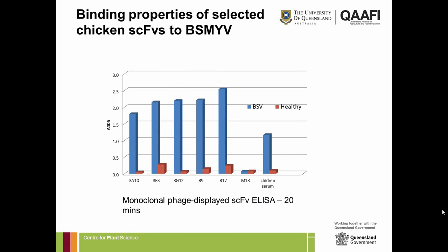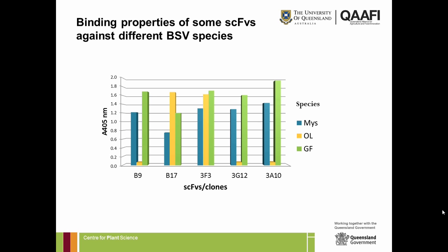Once pure clonal populations of phage were obtained, she used molecular techniques to isolate the antibody genes and examine the binding properties of individual clones. She selected quite a number that reacted strongly with banana streak virus. There was some heterogeneity in binding — some clones appeared to react with two species and others with three species of banana streak virus, which looks quite promising.